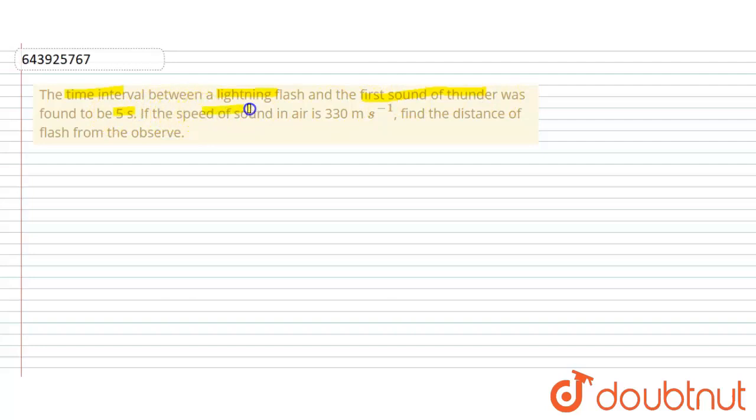And if the speed of sound in air is given, that is 330 meter per second, we have to find the distance of flash from the observer. So let's start this problem.